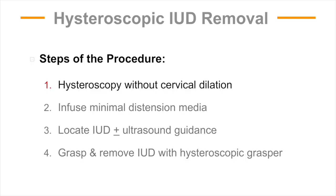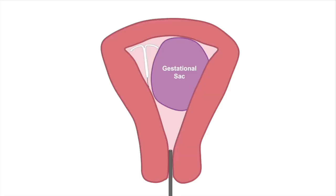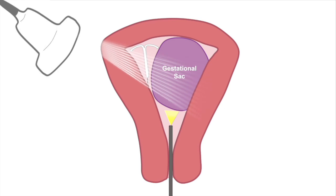Surgical steps include: first, performing hysteroscopy without cervical dilation; second, infusing minimal distension media at a very slow rate; third, identifying the IUD; and lastly, grasping and removing the IUD under direct visualization. This animation depicts the initial steps of the procedure. If the IUD is not easily visible, or if it is known to be located near the uterine fundus, ultrasound guidance is recommended.